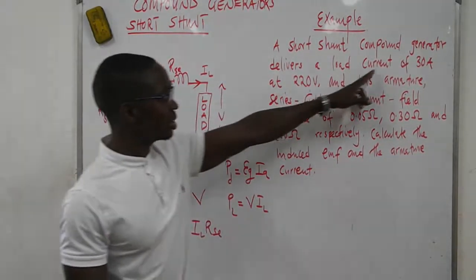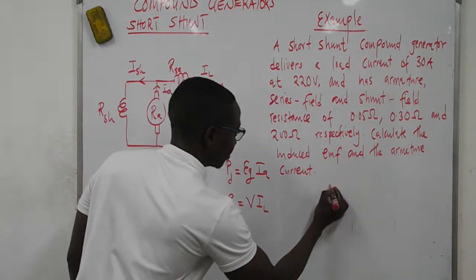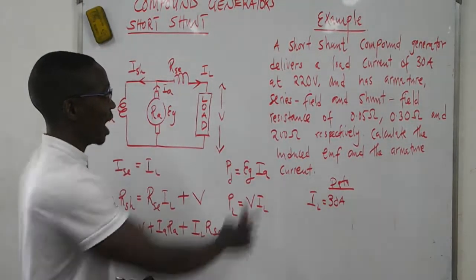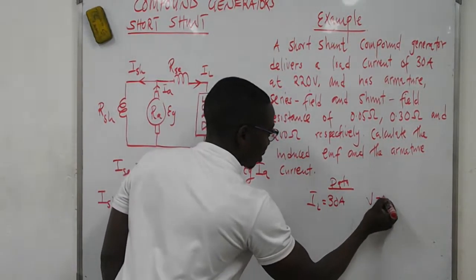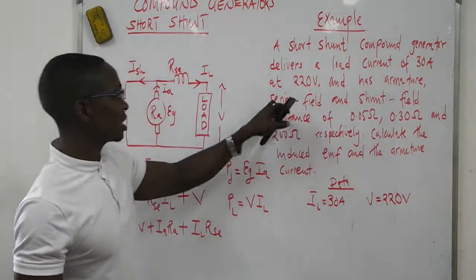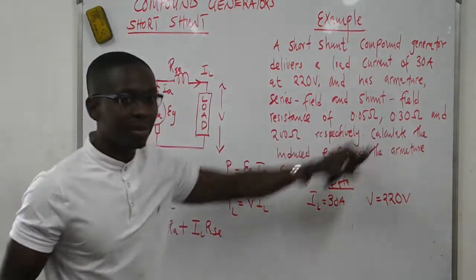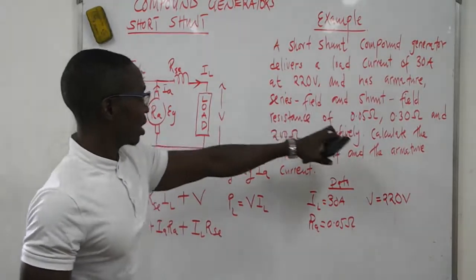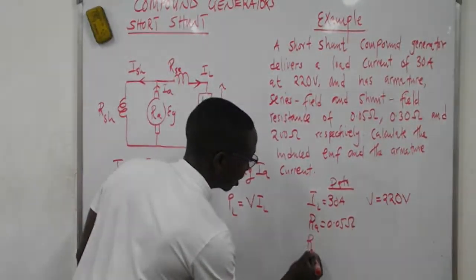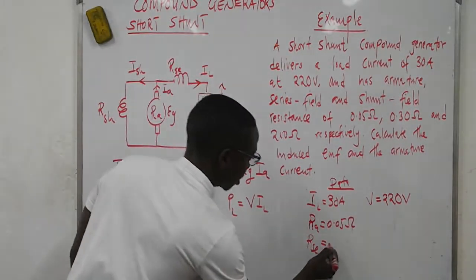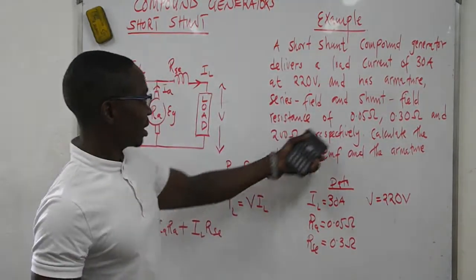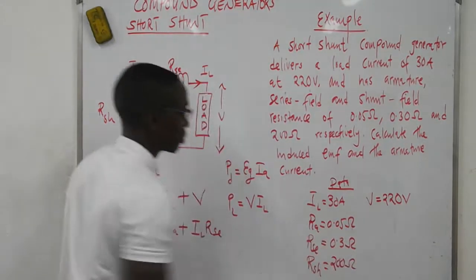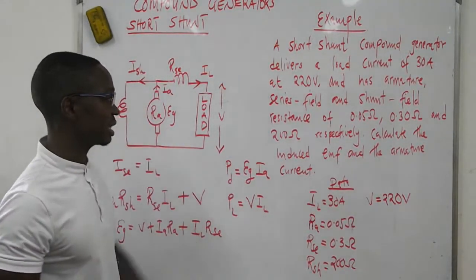A short shunt compound generator delivers a load current of 30 amps at 220 V, and has armature, series field, and shunt field resistors. The armature resistor is 0.05 ohms, the series resistor is 0.3 ohms, and the shunt field resistor is 200 ohms. We are required to calculate the induced EMF, which is E_G, and the armature current.